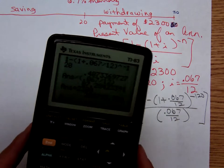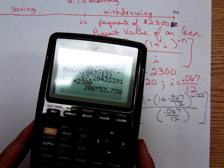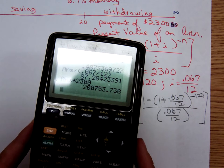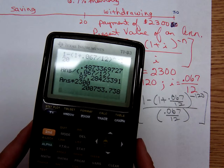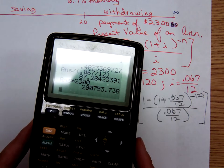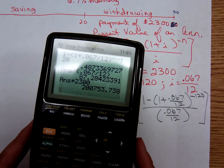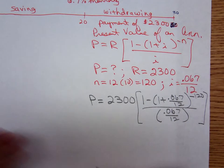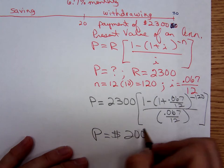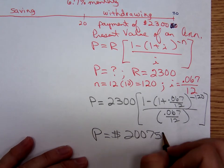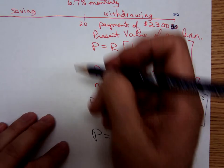She needs in her account 200,753 dollars, rounding to the nearest cent, 74 cents. So the amount that she needs in her account when she's ready to retire is $200,753.74. Let me write this down. That's the amount she needs.